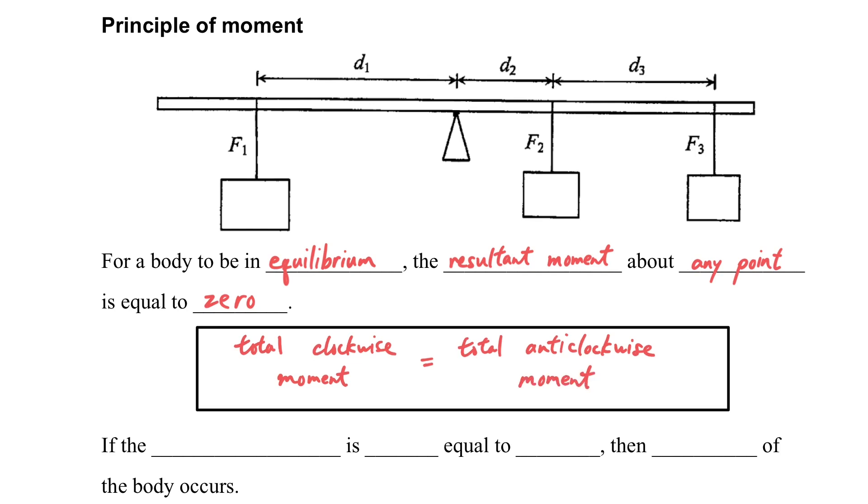If it is in equilibrium, then the total upward force equals the total downward force. So let's consider this case. If we have three things hanging here,